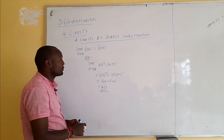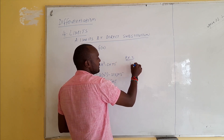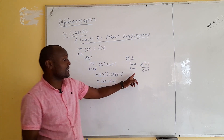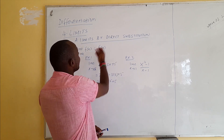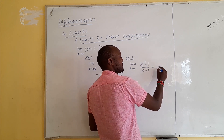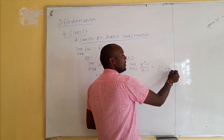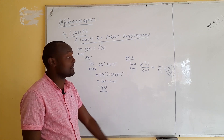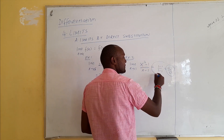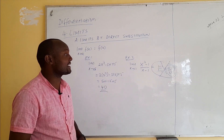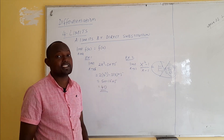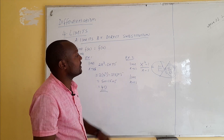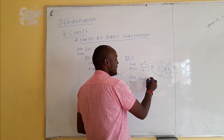Let's do Example 2. We have the limit as x approaches 1 of (x² - 1) / (x - 1). With this one it might look complicated, because when you substitute directly you get (1² - 1) / (1 - 1) = 0/0. In mathematics, getting zero over zero is problematic — you get an indeterminate form — so we cannot solve this directly.